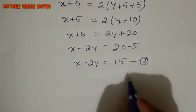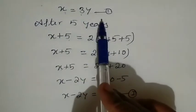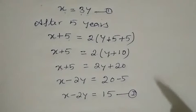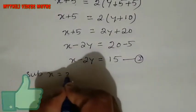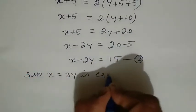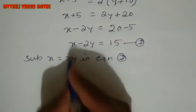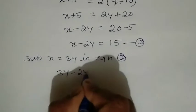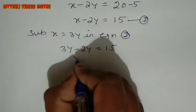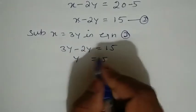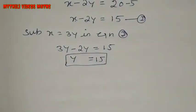Now from Equation 1 we have X equals 3Y. We substitute X equal to 3Y into Equation 2. So 3Y minus 2Y equals 15, therefore Y equals 15. The sum of the sons' ages is 15.